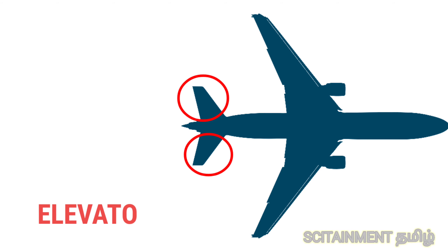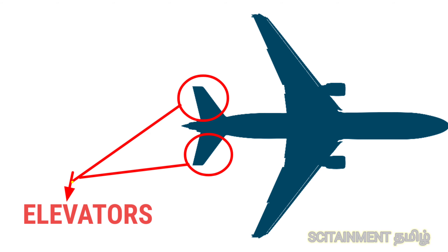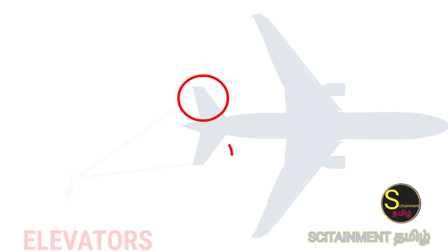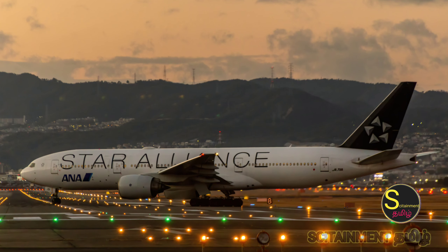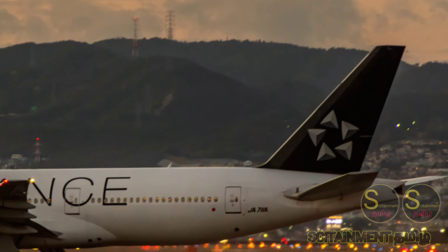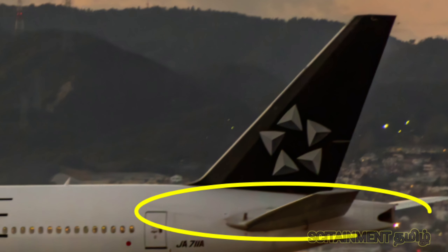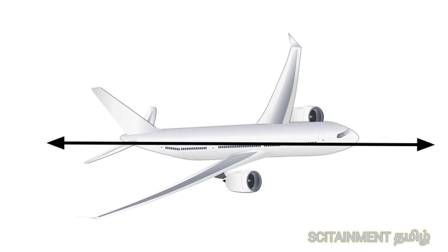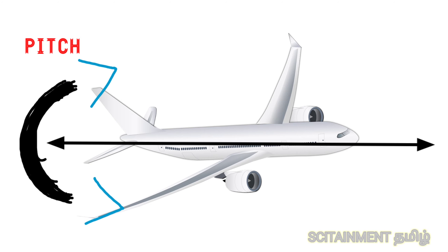In this video, we will talk about the Elevator. The Elevator is a primary flight control. If you control the plane, you can control the lateral axis — pitch.